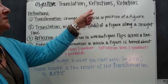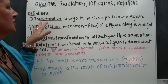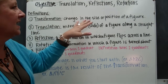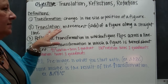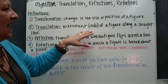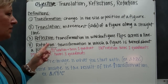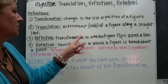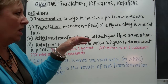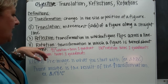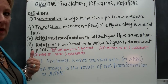We're going to be working with translations, reflections, and rotations — and some definitions. A transformation is a change in the size or position of a figure. Translation is the movement, meaning it's going to slide a figure along a straight line. A reflection is a transformation in which a figure flips across a line of a quadrant plane. And rotation is a transformation in which a figure is turned about a point.